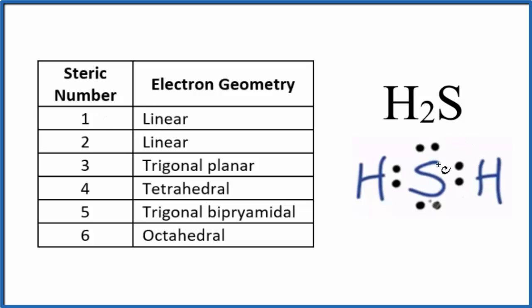So for sulfur right here, our central atom is sulfur, we have two hydrogen atoms and two lone pairs. With a steric number of four, we're going to have a tetrahedral electron geometry for H2S.